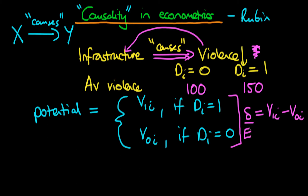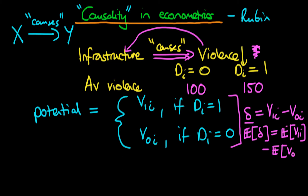In practice, what we're interested in is the average causal effect — that's the expectation of delta, which equals the expectation of V1_i minus the expectation of V0_i, just because the expectations operator is a linear operator.